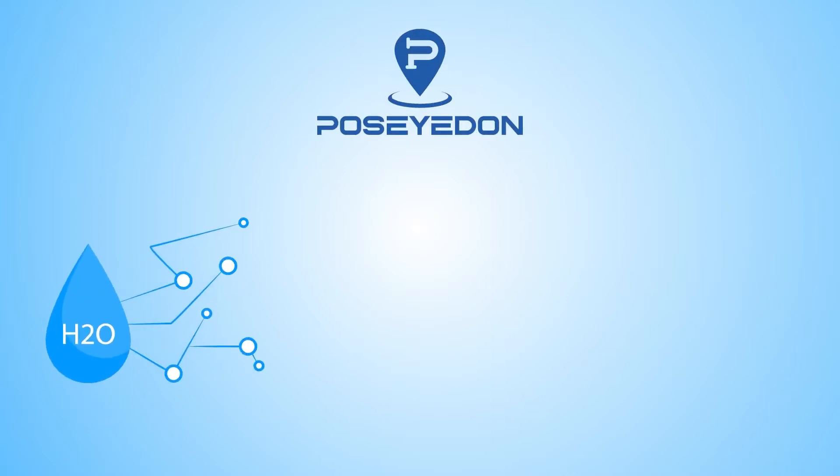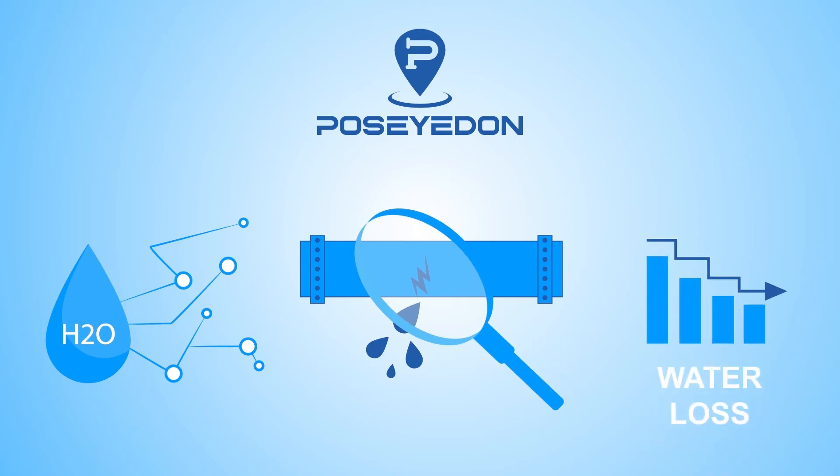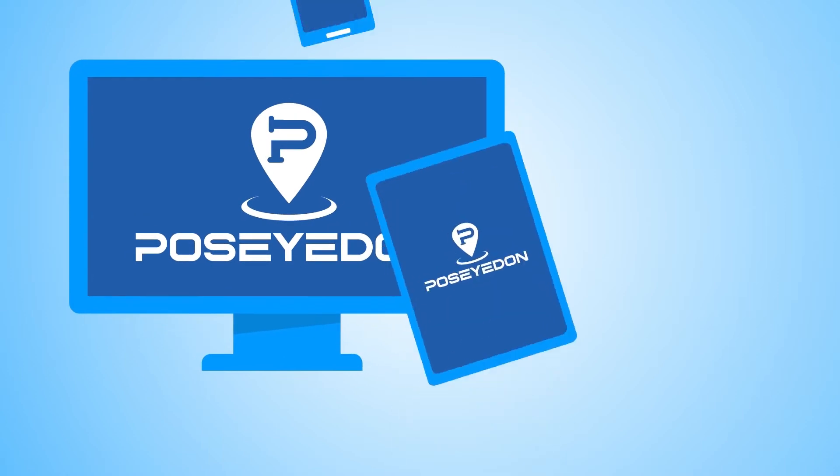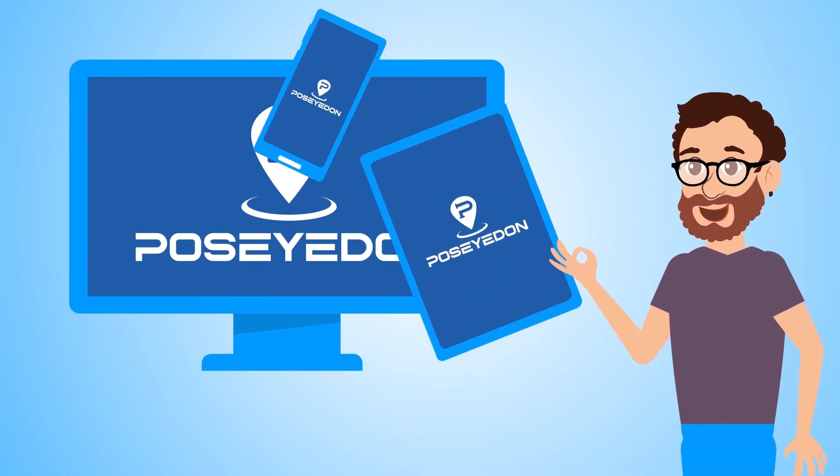We are explaining how you can always keep an eye on your water network, detect water leaks precisely, and reduce water losses significantly. All in one by using the new Poseidon Cloud from SEBA-KMT.